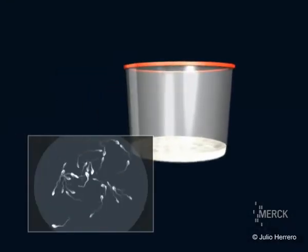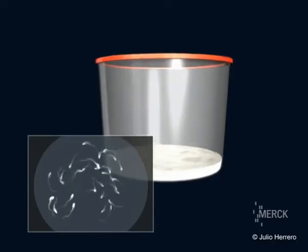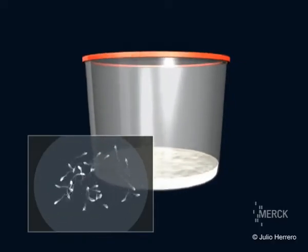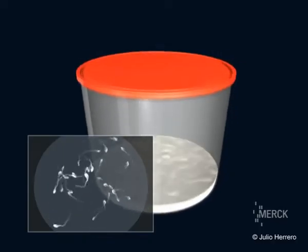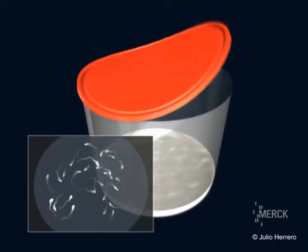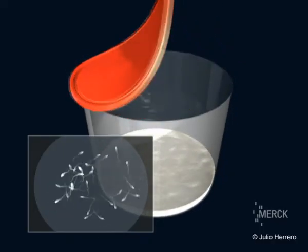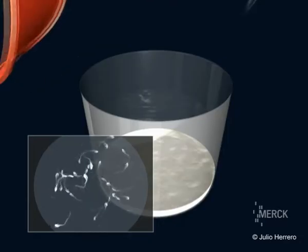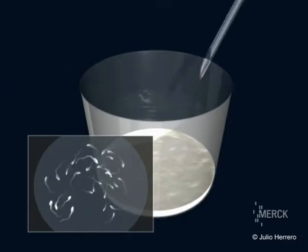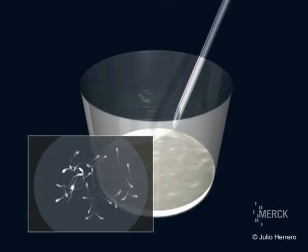The semen sample has to be obtained through masturbation after an abstinence of three to five days. The ejaculate is deposited in a collection pot.